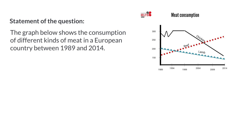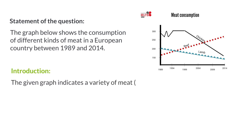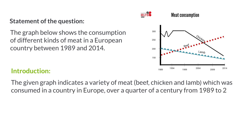So our introduction would be the following: the given graph indicates a variety of meat — beef, chicken and lamb — which was consumed in a country in Europe over a quarter of a century from 1989 to 2014.